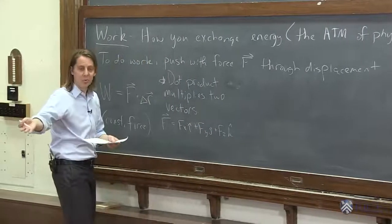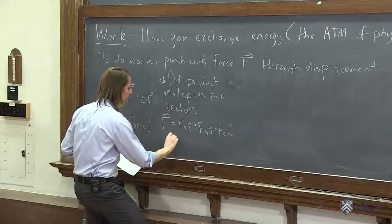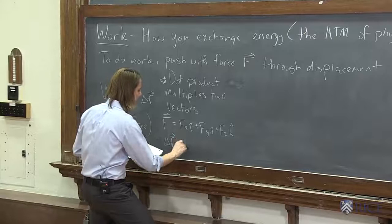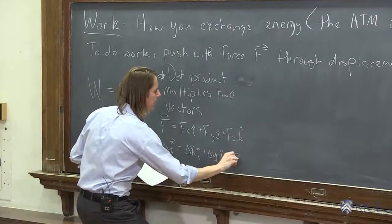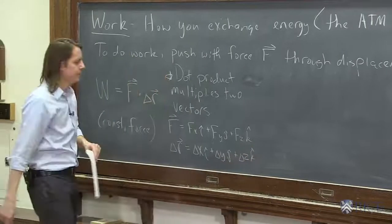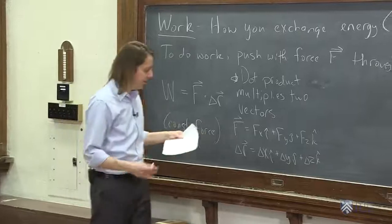Of course, the one I just did was in one dimension, but it could be written in three dimensions. And then delta R vector - well, that's just the three components: delta X i-hat plus delta Y j-hat plus delta Z k-hat. So you need both vectors fully described to take a dot product.